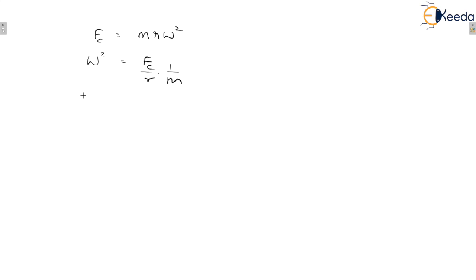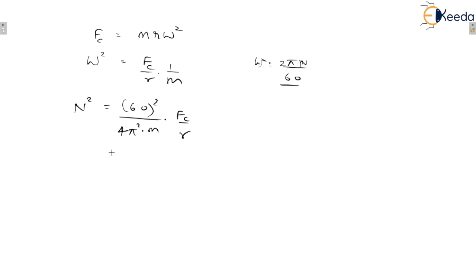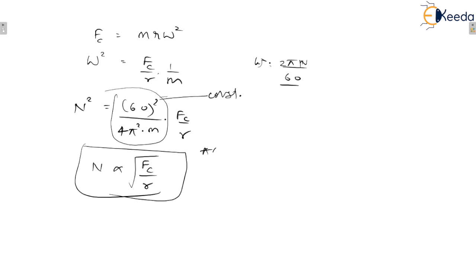To understand the diagram, you need to understand the relation: FC = mRω², so ω² = FC/(R·m). We know that ω = 2πN/60, so writing in terms of speed in RPM gives N² = (60²/4π²m) · (FC/R). The term (60²/4π²m) is constant, so N is directly proportional to √(FC/R). This is the key relation used to draw the diagram.